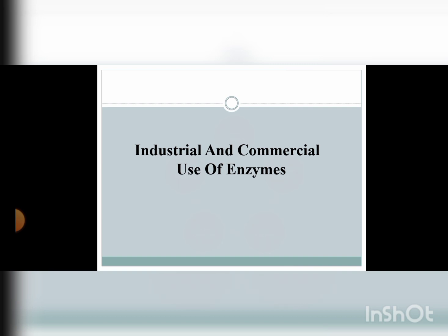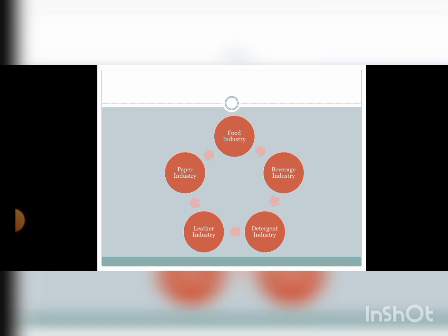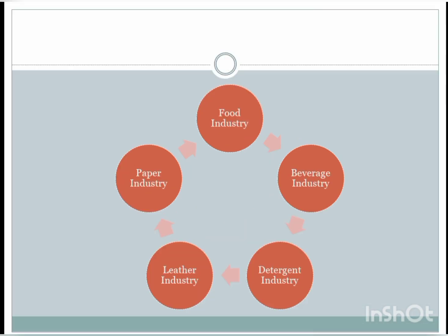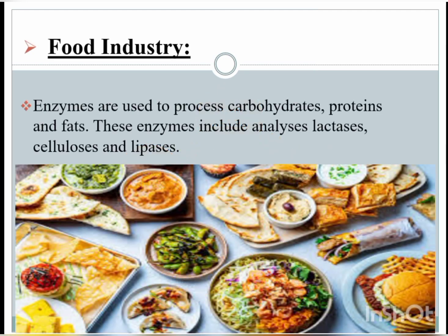Enzymes are not only important for the body — they represent life processes, and we also use them in laboratory reactions to observe the nature of bacteria and viruses. Since enzymes can speed up reactions, they can be used for different purposes: food industry, beverage industry, detergent industry, and paper industry. On the industrial level, many important reactions are carried out for manufacturing and synthesis of materials, so enzymes are very important.